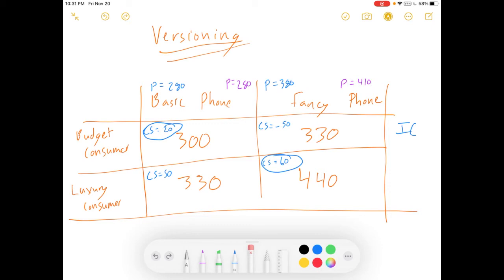Now, let's try a different version. Let's keep the same basic price. But let's add more to the fancy price. Because, you know, our consumer is willing to pay $440. Maybe this will get better? No. I'll show you why not. Okay. So, this consumer surplus didn't change. This one got worse. Our budget person still wants the basic phone.